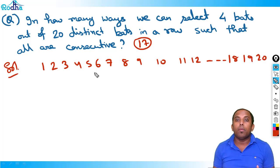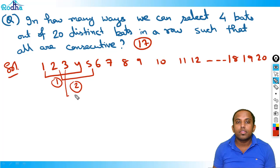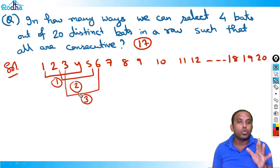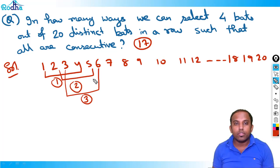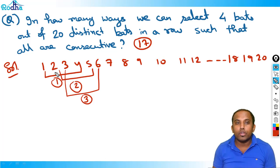I have to select four bats such that all are consecutive. So the cases are: 1,2,3,4 — first case; 2,3,4,5 — second case; 3,4,5,6 — third case; and so on, 4,5,6,7 — fourth case; 5,6,7,8 — and like that. So we're moving in blocks of four, one step at a time.